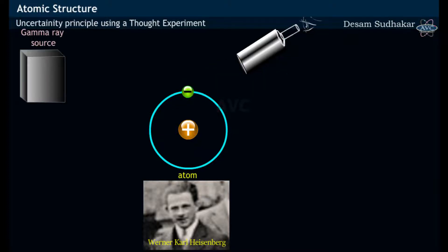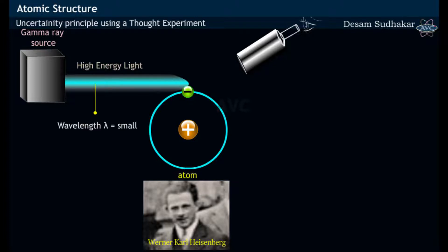Now, from the left side, a high-energy light with short wavelength like gamma rays is made to fall or illuminated on the electron.